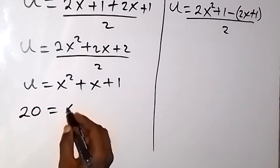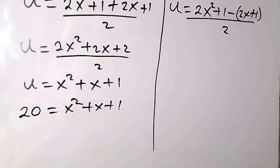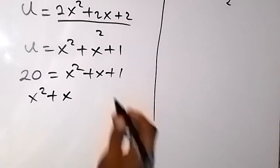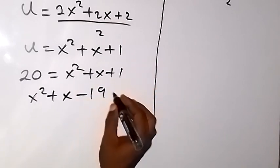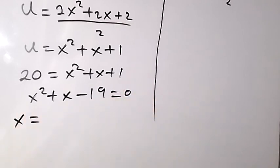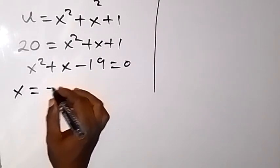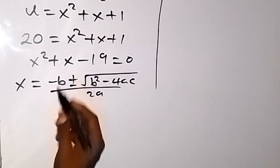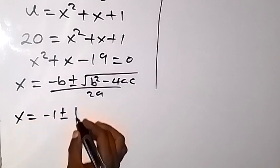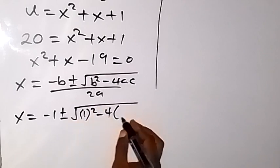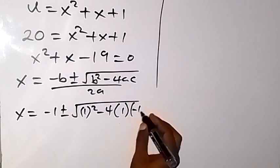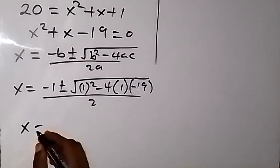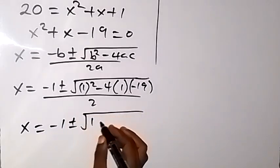Since u equals 20, we substitute: 20 equals x squared plus x plus 1, forming the quadratic x squared plus x minus 19 equals 0. Using the quadratic formula with a equals 1, b equals 1, c equals negative 19: x equals negative 1 plus or minus square root of 1 minus 4 times 1 times negative 19, all over 2.